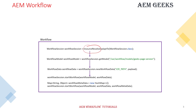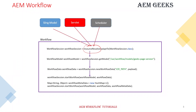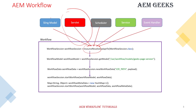All the workflow-related objects are obtained from the resource resolver using adaptTo(). This resource resolver is available in all backend modules. Using this resource resolver you can call this workflow in any backend module. As part of this tutorial I'll show you how to trigger this workflow in a servlet, and the same approach applies to any backend module.